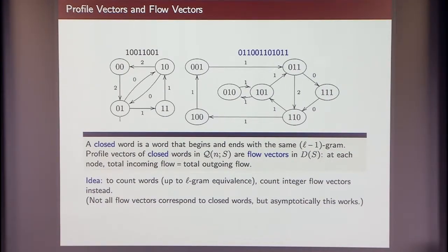So the flows basically tell you how many times do you have to traverse a given edge when you do reconstruction, but they also tell you the profile vectors in some sense. And if I have closed words, then the interesting thing is that if I have closed words, then I have a flow preservation property in this graph that says that the sum of the flows that are incoming to a vertex is equal to the flow at the outgoing, going out from the vertex.